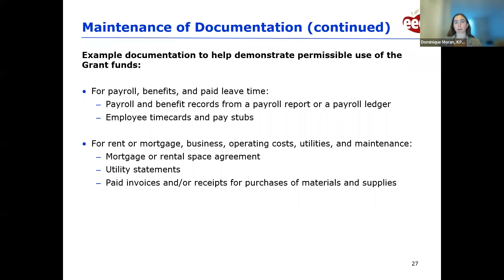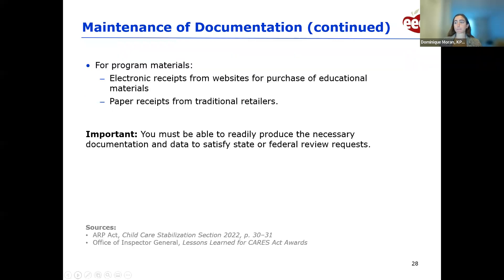Adequate supporting documentation should accurately capture proof of expenditure, which can vary by type. For payroll, benefits, and paid leave, appropriate documentation might be payroll and benefit records, employee time cards, and pay stubs. For rent and mortgage payments, it might be contractual agreements or checks paid to landlords. For operating costs and utilities, you might have utility company statements, and for maintenance, paid invoices or receipts. For program materials like educational supplies and toys, you might have electronic or paper receipts. You should be able to readily produce supporting documentation at any time to satisfy state or federal review requests.